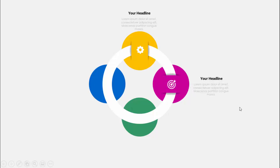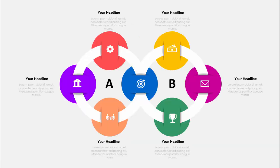On the next click it will show the second option, then the third and the fourth option. I have also created one more slide with six options, with option A and option B in different color combinations. You can add one more extra option depending on your requirement.